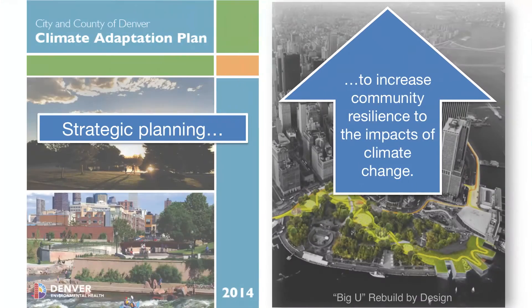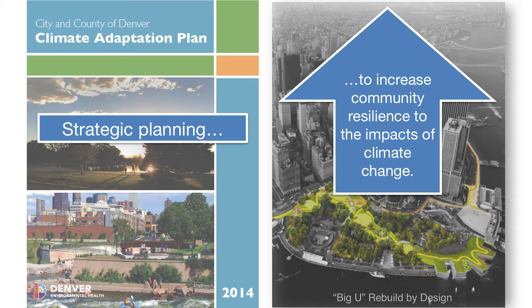The second aspect of climate action planning is that there are also strategic plans aimed at increasing the community's resilience to the impacts of climate change. So far in the United States, most of the activity that cities and communities have been tackling is on the reduction of greenhouse gas emissions side. But increasingly, over the last five years, we've seen many communities shifting and thinking more about the issue of climate adaptation, or increasing the resilience of their communities.